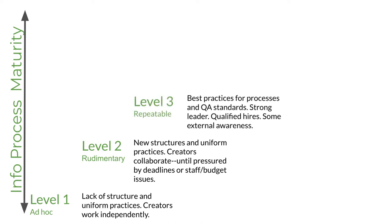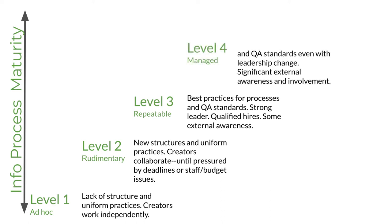Level three is labeled "repeatable" — other models label it scaling or integrated. There are now some best practices for processes and some quality assurance standards, a strong content leader, and they're hiring qualified content professionals. There is some external awareness within the organization of content operations. Level four is labeled "managed" — other models label it strategic. The idea at this level is that quality assurance and other best practices exist outside of leadership, meaning if a leader changes, the same practices are continued. There is now significant external awareness and involvement — people outside content operations know about the content team, and the content people are involved in things beyond content operations.